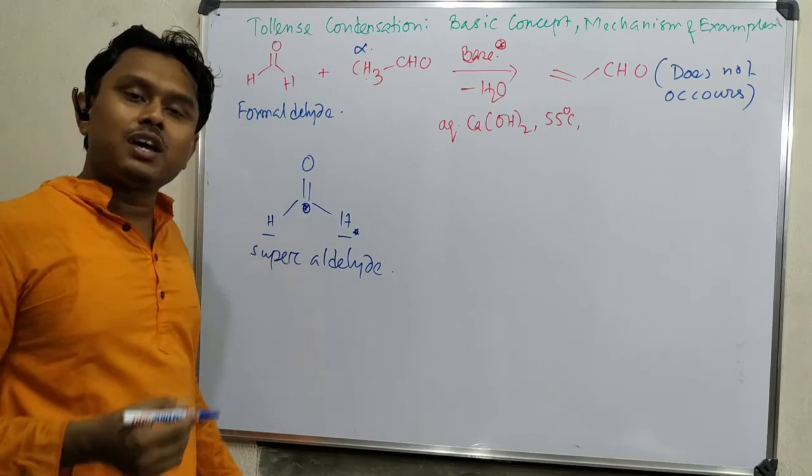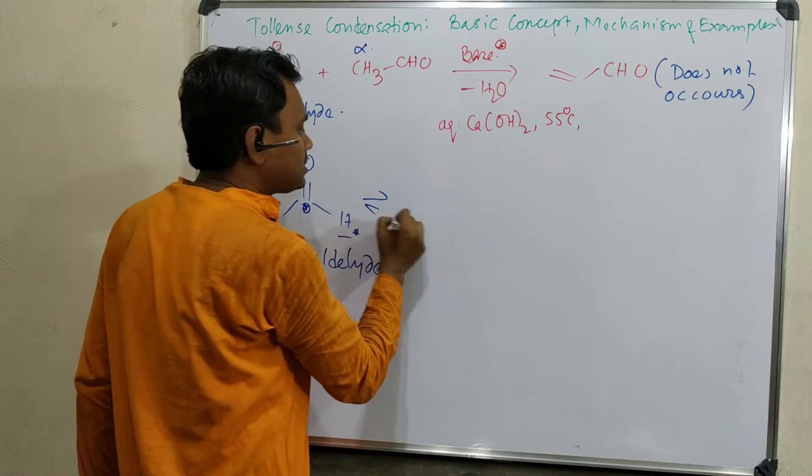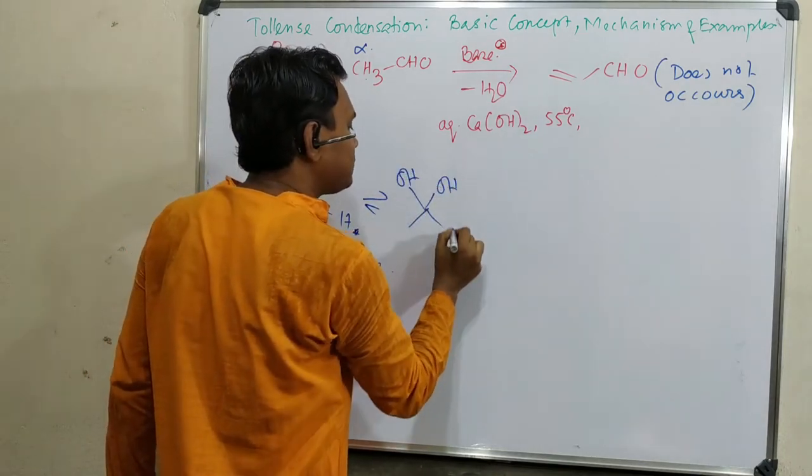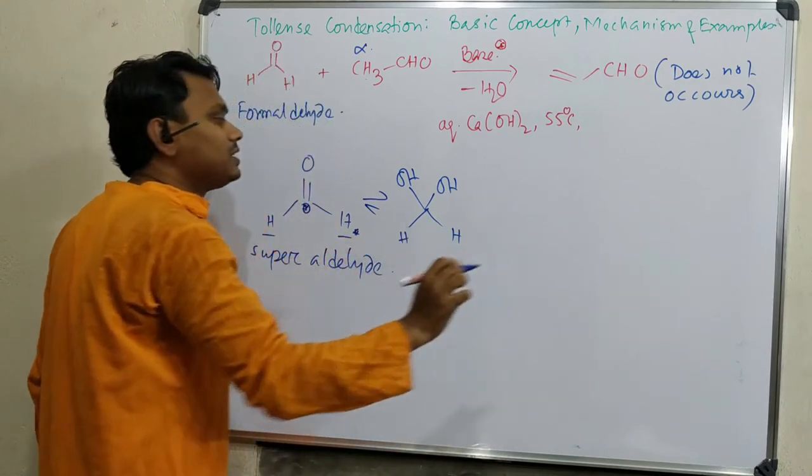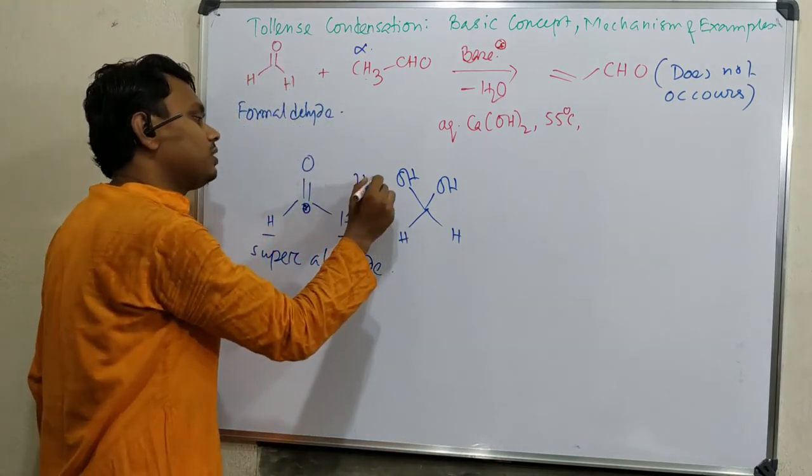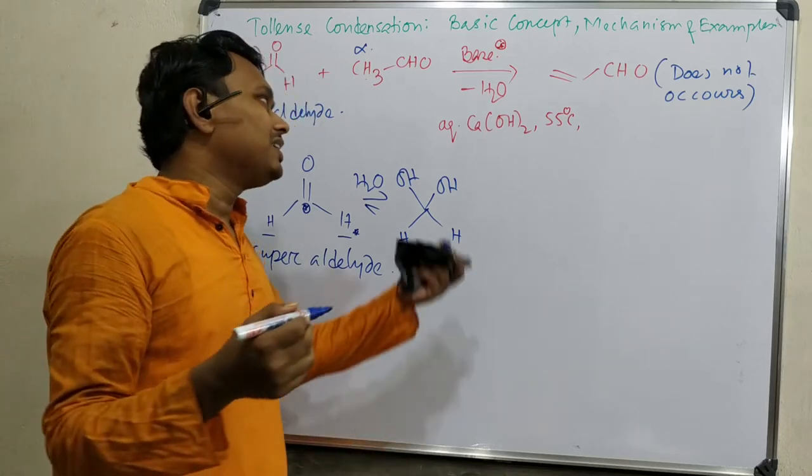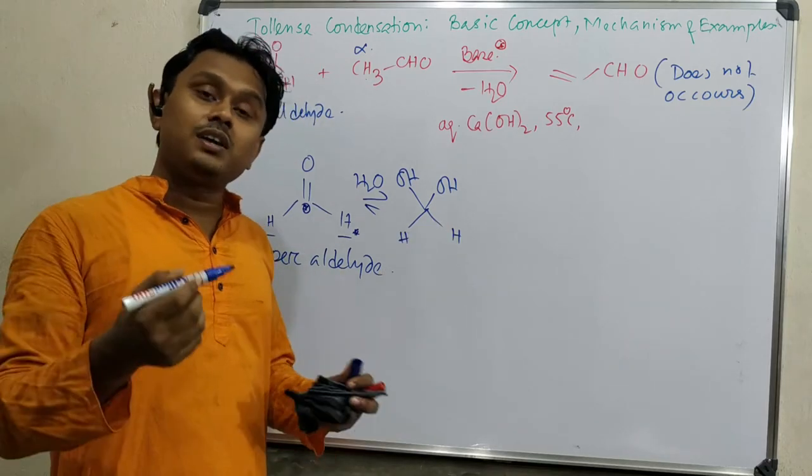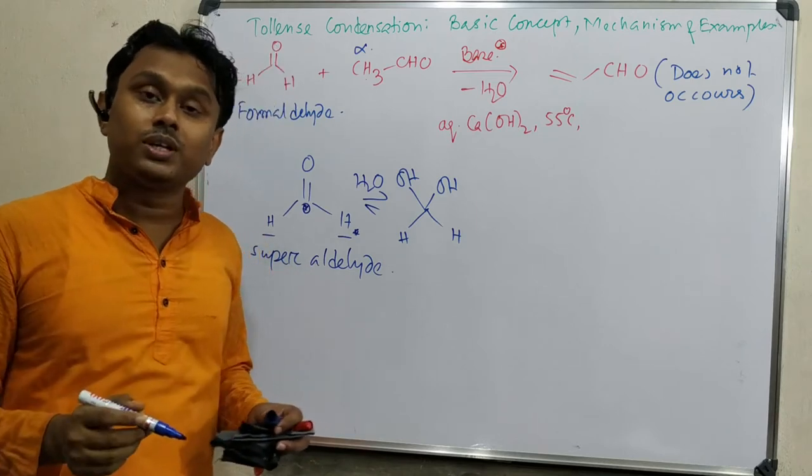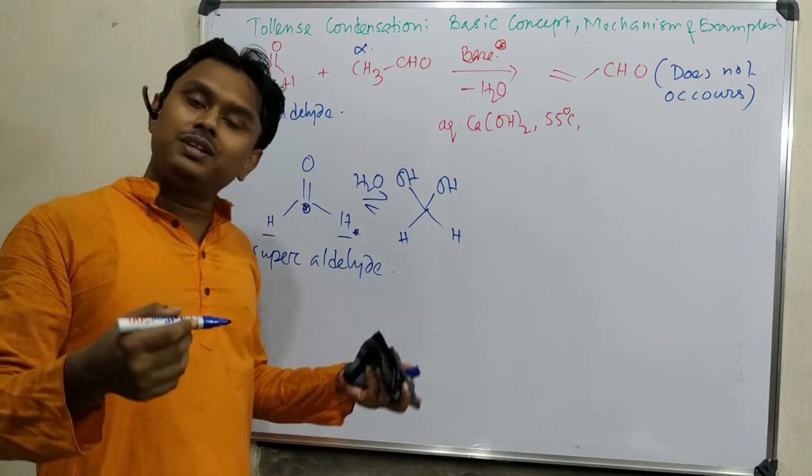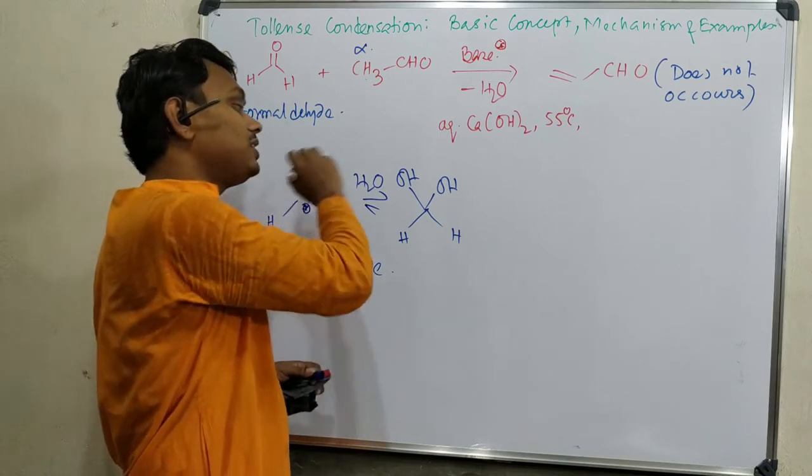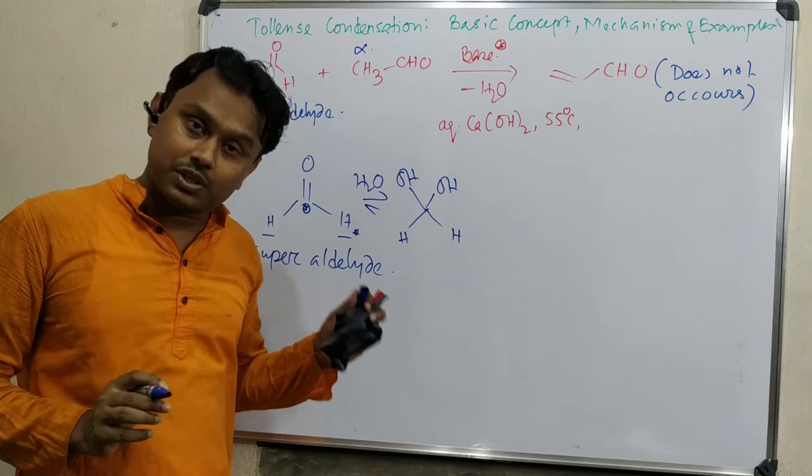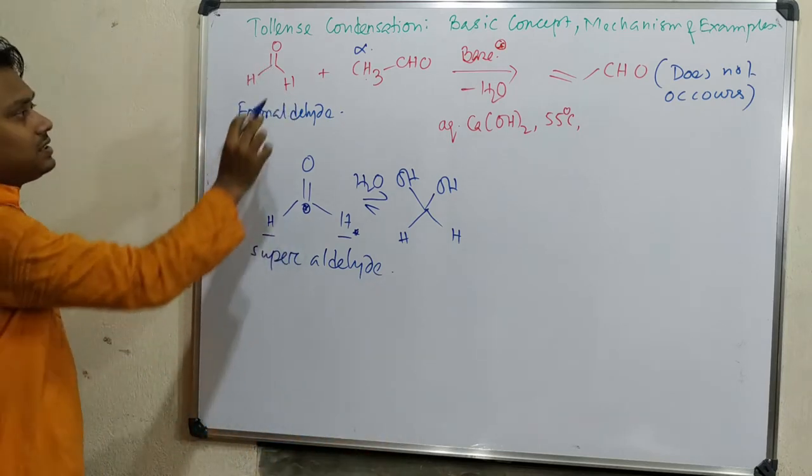In reality, if you check the gem diol formation from aldehyde, formaldehyde remains almost completely in gem diol form in water. Although other aldehydes have some equilibrium. Even if you check chloral hydrate, due to the very high electron withdrawing groups, it prefers to remain in gem diol formation. But formaldehyde is completely, so these indicate this is so much electron deficient.